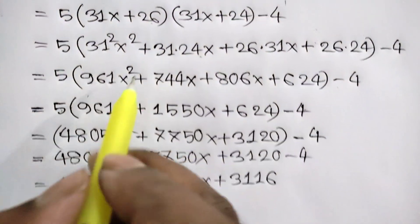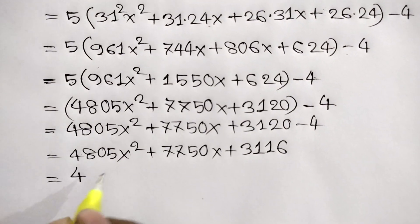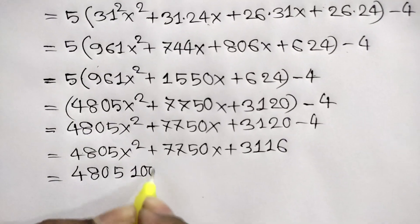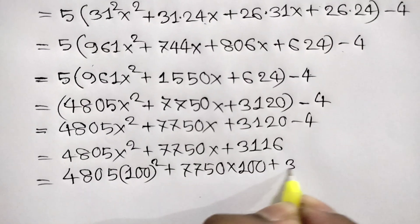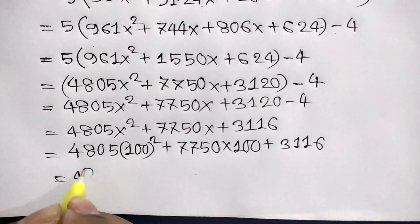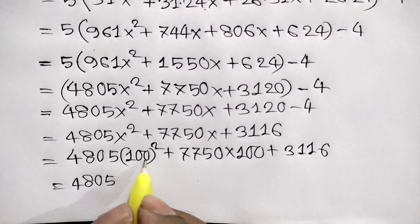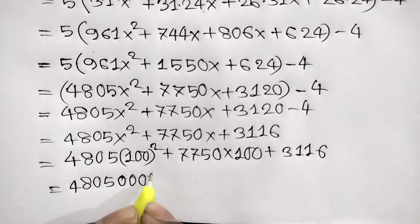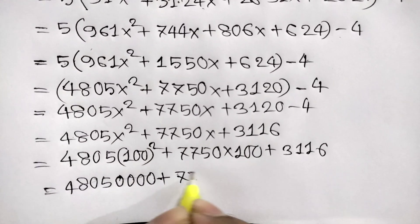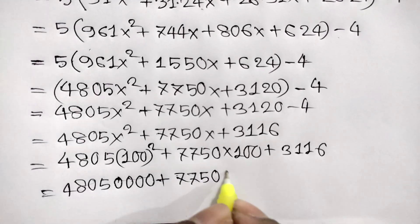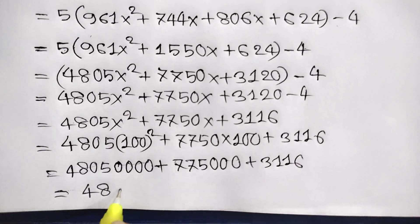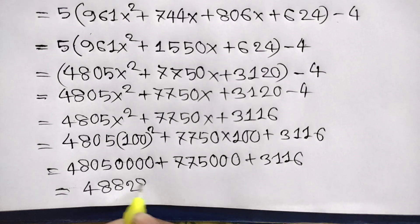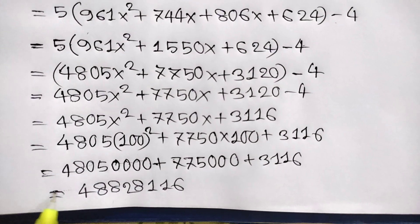Remember x equals 100, so we write 4805 times 100 squared plus 7750 times 100 plus 3116, which equals 48050000 plus 775000 plus 3116. Adding these three numbers we get 48828116, and that is our final answer.